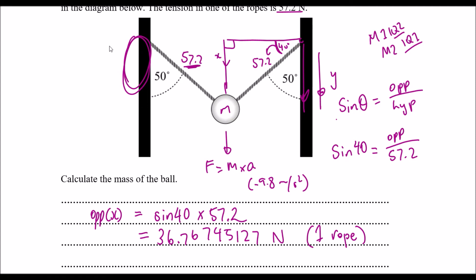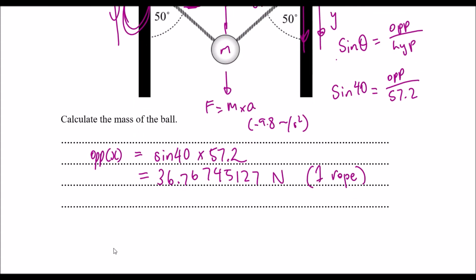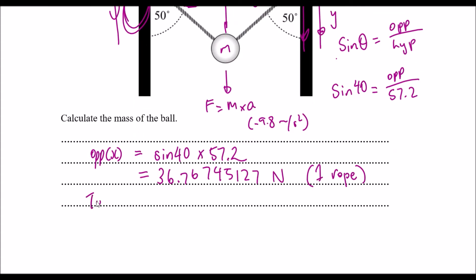So we can safely assume that the other y component pulling it down will also be equal to this value here. So what we can say is the total force down in this case, it's just times by 2, which gives us 73.534 Newtons. That's the total force we're using.